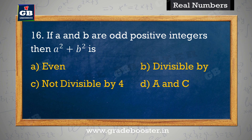If a and b are odd positive integers, then a² plus b² is. Agar a aur b odd positive integers hain, to a² plus b² hai. A. Even, B. Divisible by 4, C. Not divisible by 4, D. A and C.